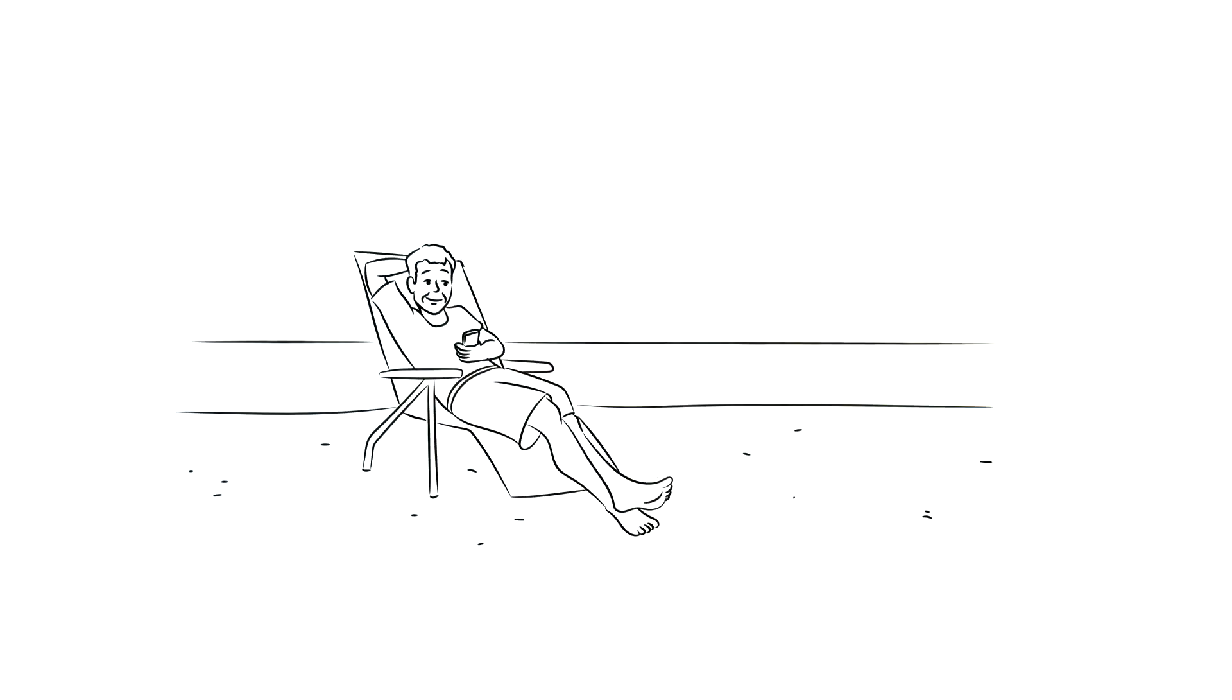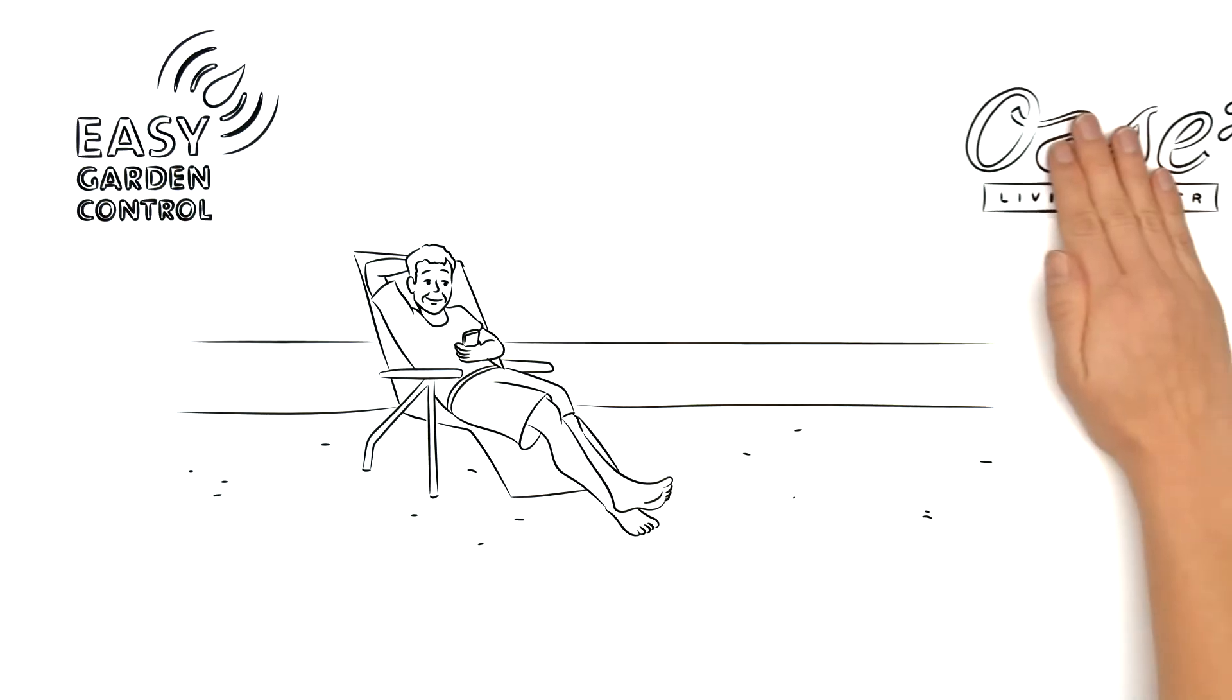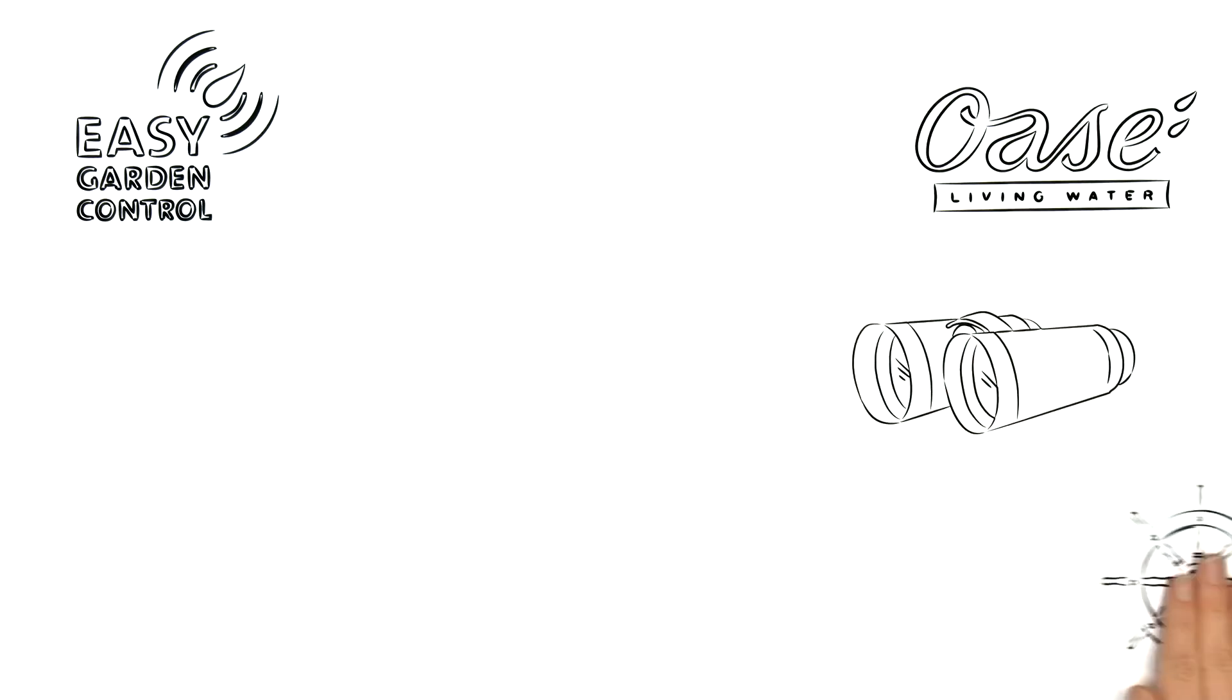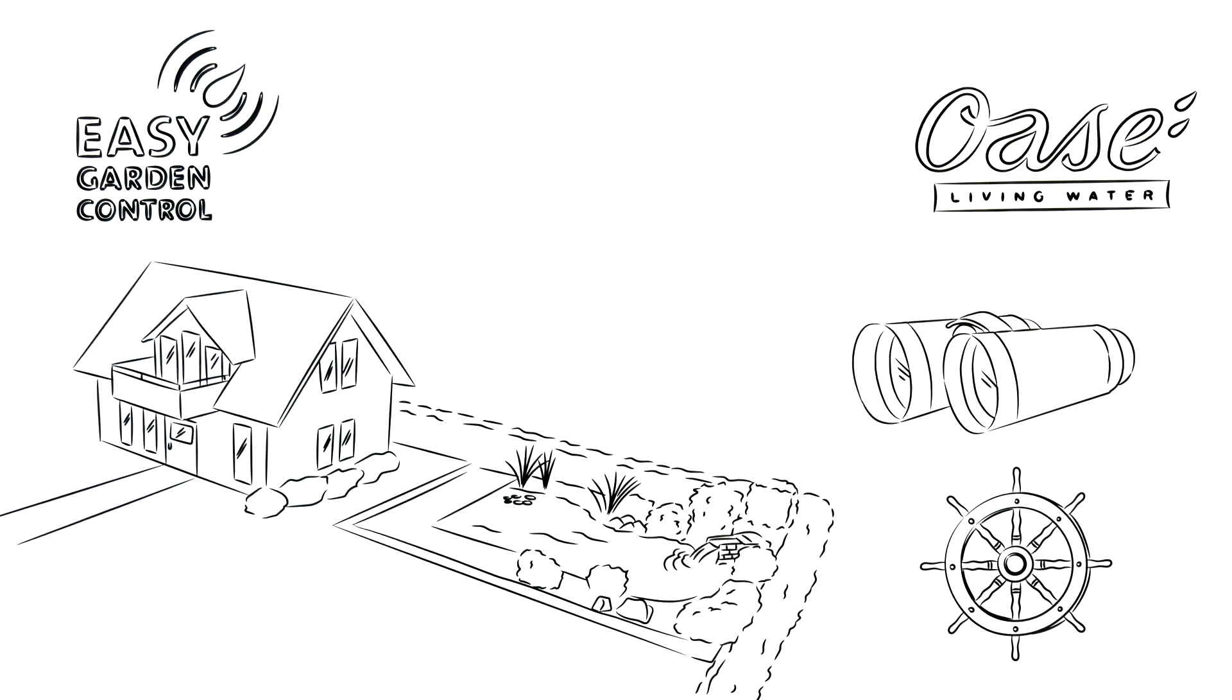But Matt still checks the condition of his pond quickly with Easy Garden Control from OASA. That's because this system allows him to monitor and control his garden and pond remotely.